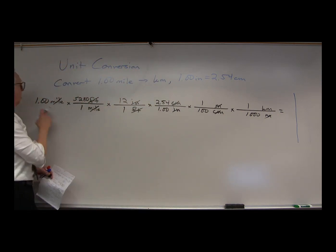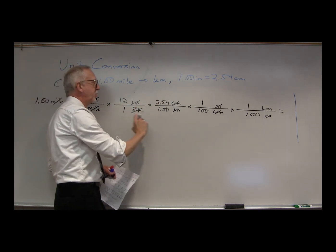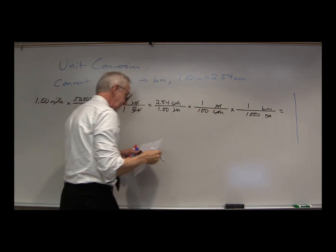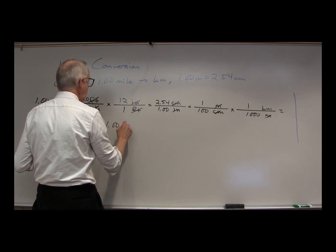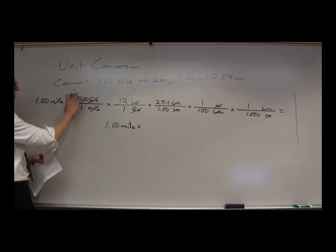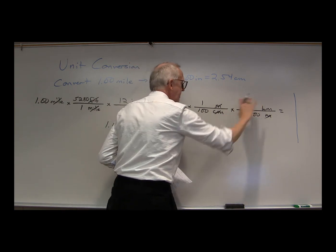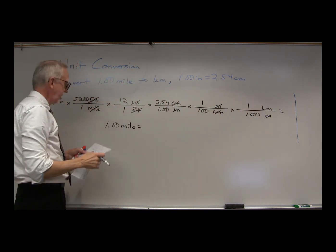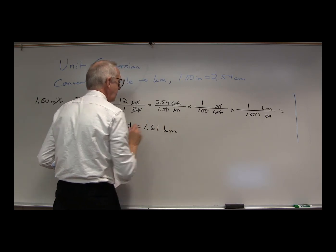Multiply that all out. 1.00 times 5,280 times 12 times 2.54 divided by 100 divided by 1,000. What do we end up with? We end up with 1 mile equals 3 sig figs, definition, definition, 3 sig figs, definition, definition. We can keep 3 sig figs. 1 mile is 1.61 kilometers.